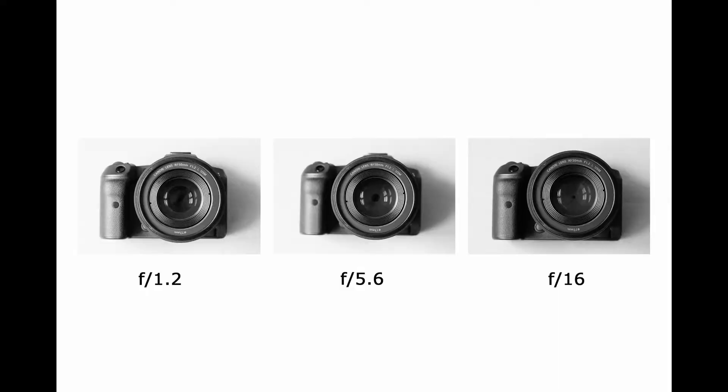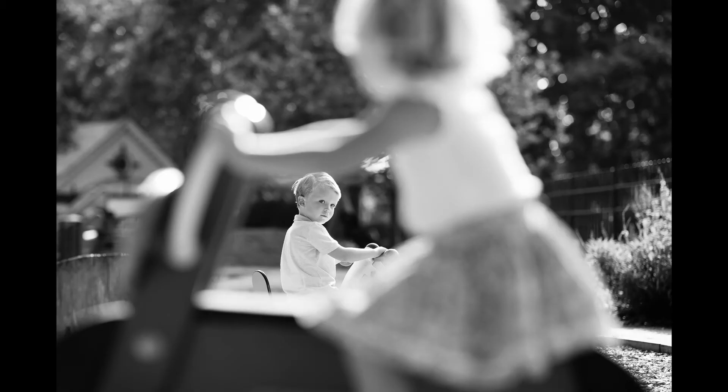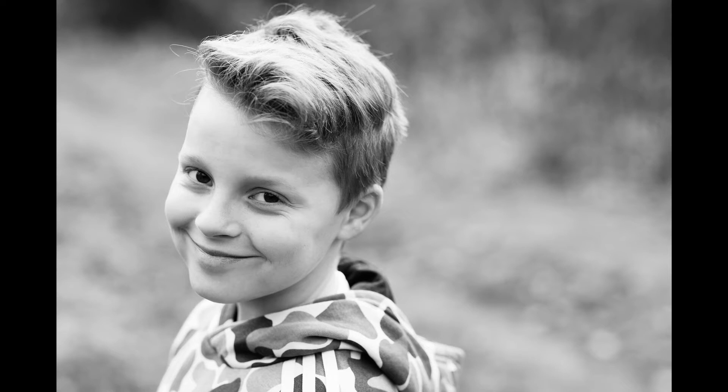The aperture is the hole in your lens that controls how much light enters your camera. It works in the same way as the pupil in your eye — dilates in dark conditions and contracts in bright ones. Aperture also controls the depth of field in your image, that is the amount of your picture that is sharp from front to back. Aperture and shutter speed are connected to get the perfect exposure.